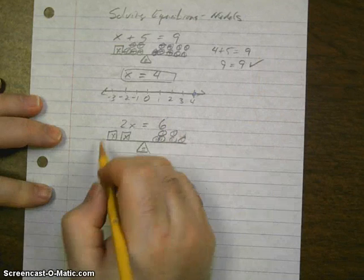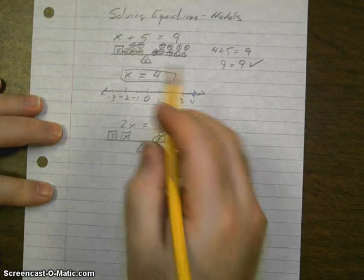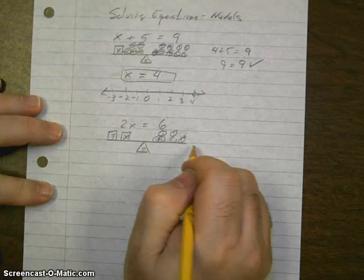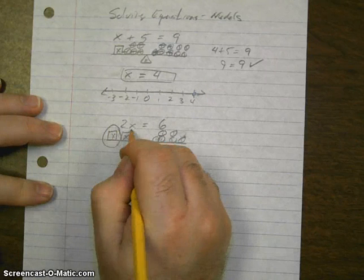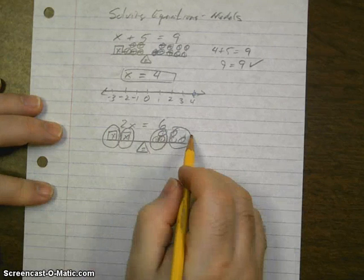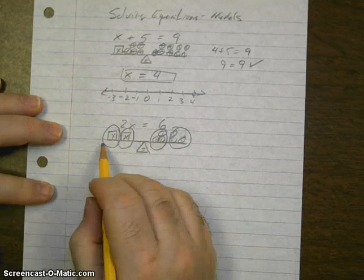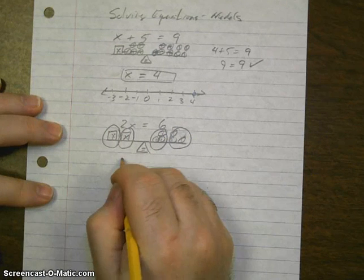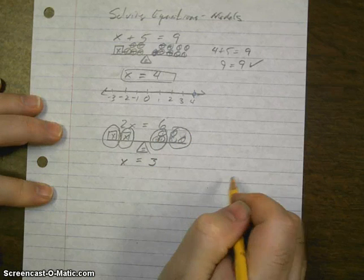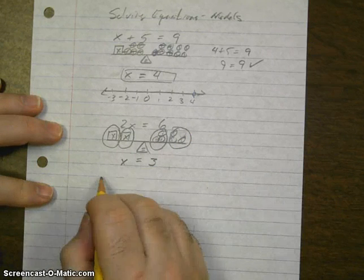In order to solve, what I need to do is divide both sides into 2 equal groups. In each group, there is an x on this side and a 3 on that side. x equals 3.